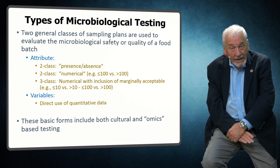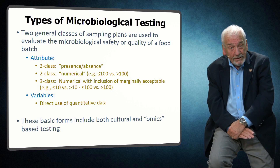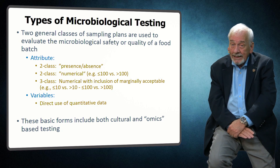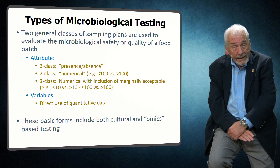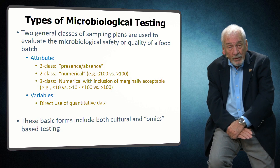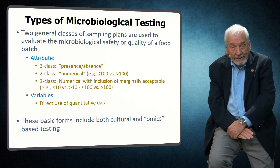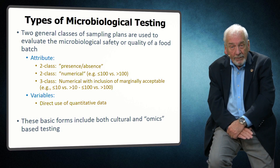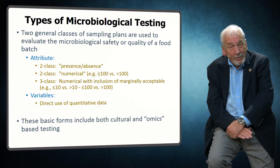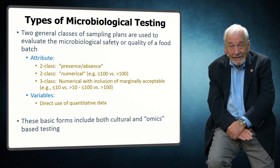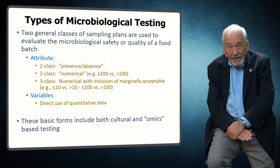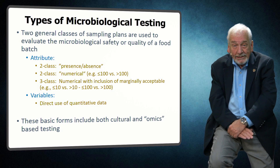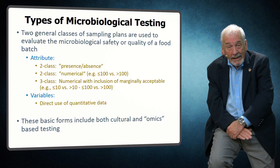There are two general types of sampling plans used in microbiological testing of foods: variables and attribute testing. Variables testing involves the direct use of quantitative data and is seldom used in food testing programs. Instead, food testing almost exclusively uses attribute testing. This type of testing stratifies the testing results into acceptable and non-acceptable attributes. In two-class attribute testing, the responses can be based on simple presence and absence testing, which is often used in assays focused on the identification of pathogenic bacteria — for example, sampling plans for Salmonella or Enterohemorrhagic E. coli are based on simple detection of the microorganism and not on the levels present.